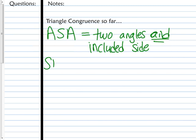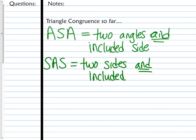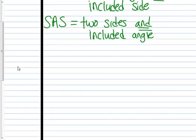SAS is basically the opposite. That's two sides and the included angle. You should be copying these notes out on your page as well. And then SSS is three sides of one congruent to three sides of another. Nice little recap there.